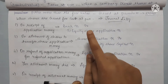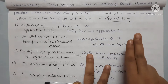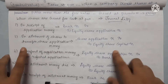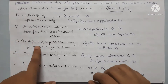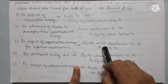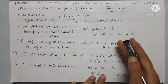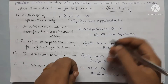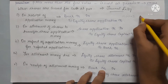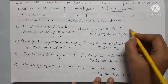On refund of application money for rejected applications: we received 1,500 applications but allotted only 1,000. The excess 500 applications must be refunded. We have 2,500 or 3,000 amounts received but actually only 1,000 amounts are kept — the rest must be refunded.